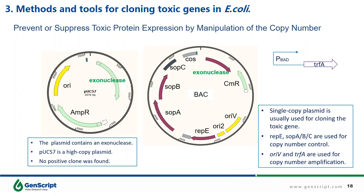I want to show you another case for copy number manipulation. I once received an order for DNA synthesis containing an exonuclease expression cassette. At the beginning, it was cloned into the high copy plasmid pUC57, but it failed — I could not find the correct colonies. Then, this DNA sequence was cloned into a bacterial artificial chromosome vector, which we call BAC. It is a single-copy plasmid usually used for cloning large DNA fragments. I used this backbone for cloning the toxic gene, and it worked — I finally got the correct colonies. This vector can also be used for copy number amplification.